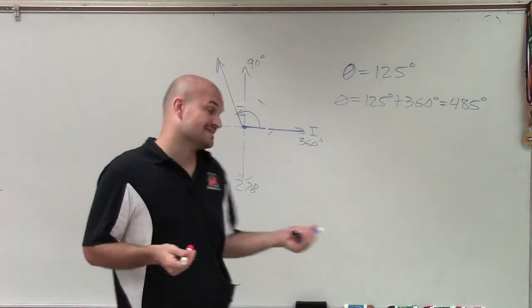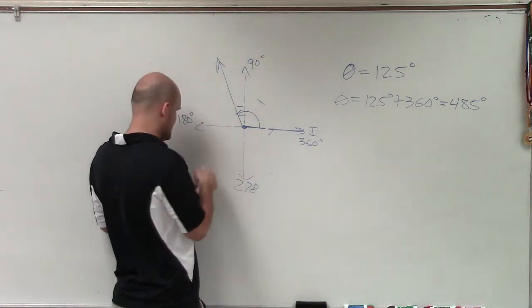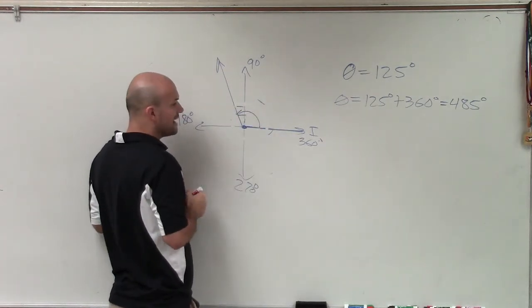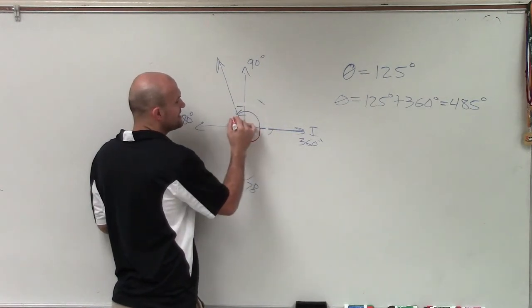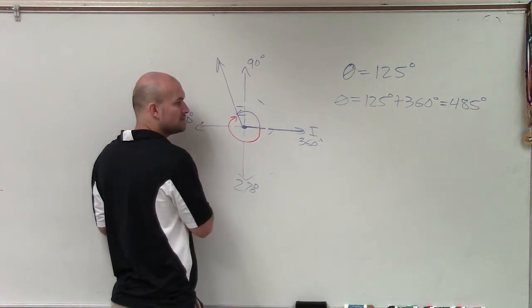Now I have this angle, but we notice that that's in the positive direction, right? Counterclockwise is going to be positive. So now I want to say, well, then what would be this angle going back in the negative direction, right?